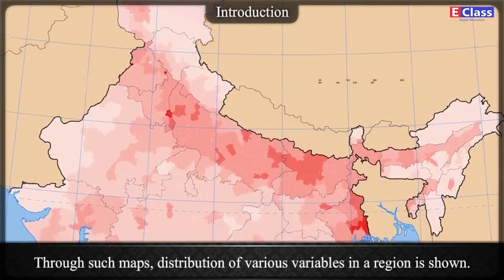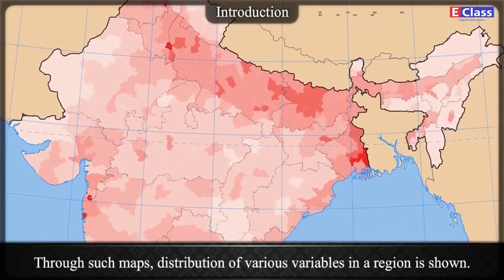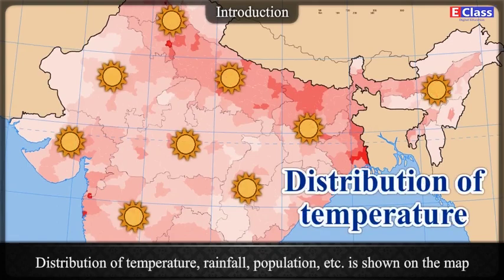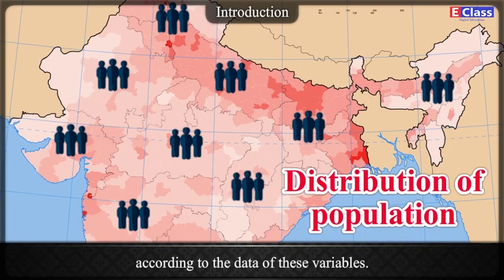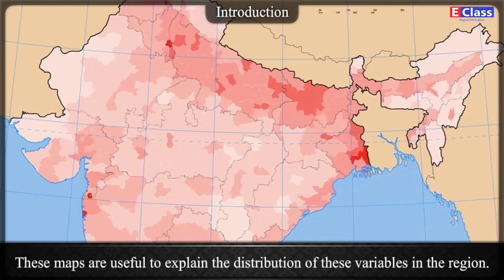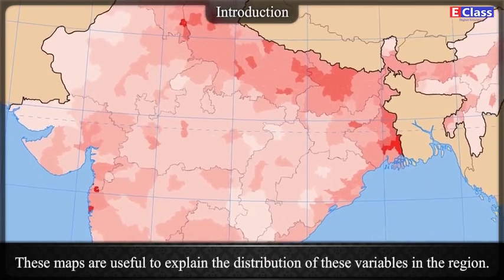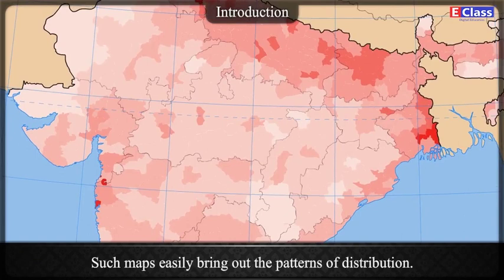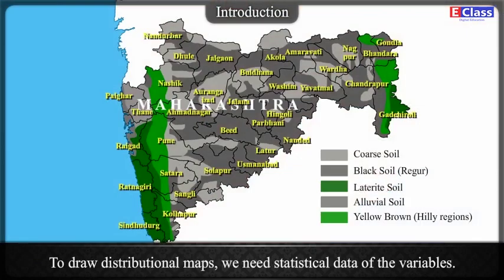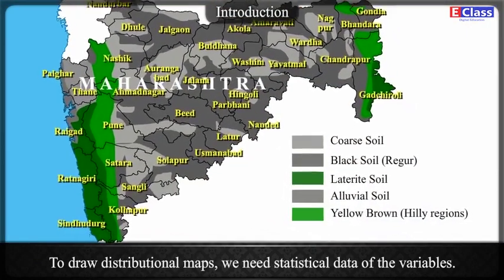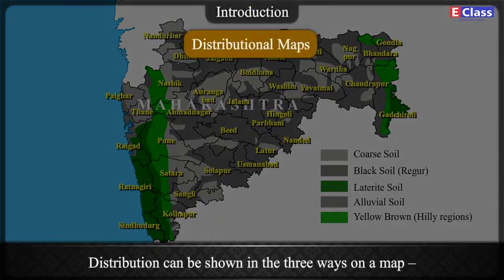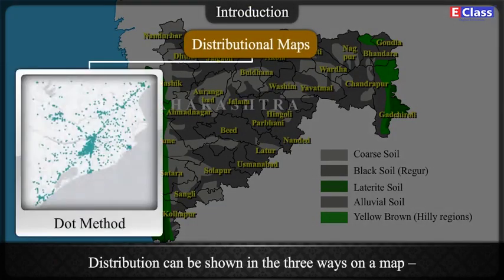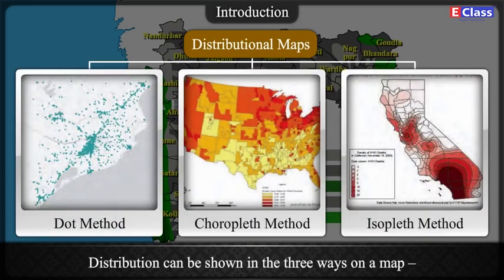Through thematic maps, distribution of various variables in a region is shown — distribution of temperature, rainfall, population, etc. is shown on the map according to the data of these variables. These maps are useful to explain the distribution of variables in the region and easily bring out the patterns of distribution. To draw distributional maps, we need statistical data of the variables. Distribution can be shown in three phases on a map: Dot Method, Choropleth Method, and Isopleth Method.